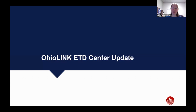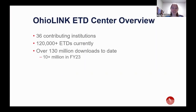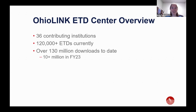OhioLINK ETD Center update. OhioLINK is a library consortium of over 100 academic libraries and the State Library of Ohio. We share purchases and materials with each other. We do central cataloging and share records for purchased content with all of our members. We also have some shared systems: our electronic book center, our electronic journal center, and the electronic theses and dissertation center — the ETD — which is what we'll be talking about today. Of those OhioLINK members, we have 36 contributing institutions to the ETD Center. Not all of our members have graduate programs, so that's why it's a smaller number.